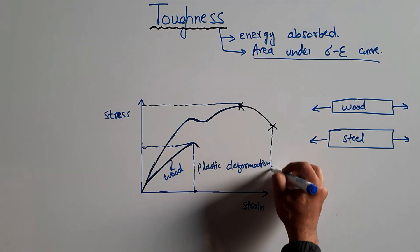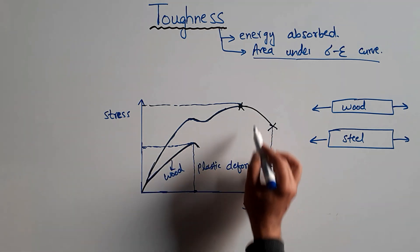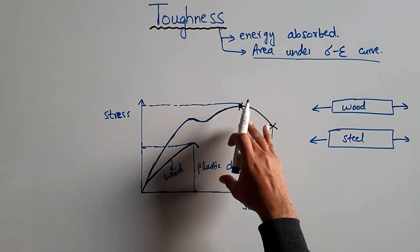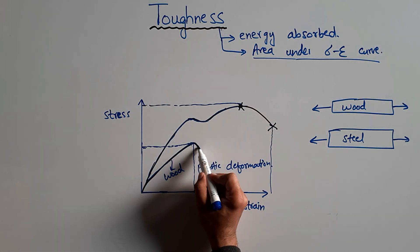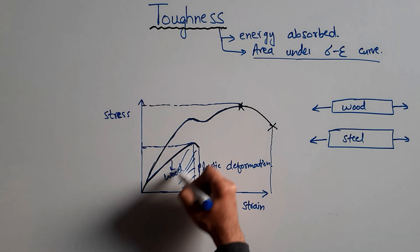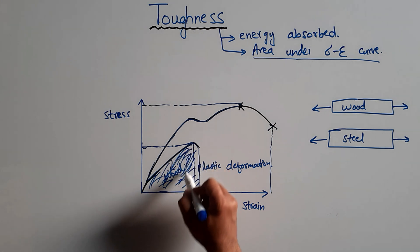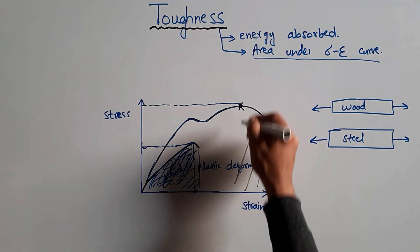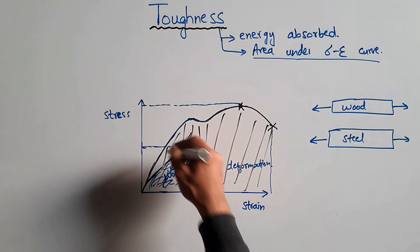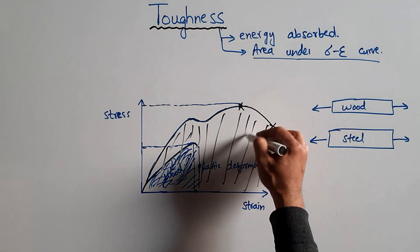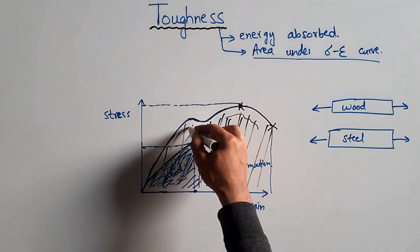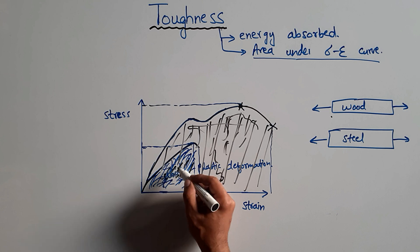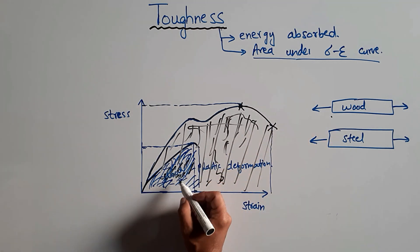Comparing the two graphs, a high amount of energy is absorbed by the steel material upon loading. The area under the wood's curve is really small compared to the area under the steel's curve, which is very large. The greater area shows that a higher amount of energy has been absorbed by the steel material, while the wood shows a very small energy absorption. This clearly shows that steel is a much tougher material compared to wood.